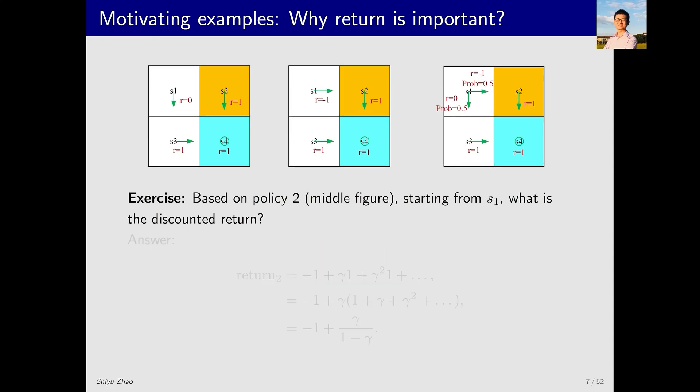For the second policy, I start from here and then move in this direction, proceed to this point and then stay still. Following this trajectory, what is the return? Initially, the reward is negative 1 for entering the forbidden area. Then, upon entering the target area, I continuously receive rewards of positive 1. Summing up the subsequent expressions within the parentheses yields gamma divided by 1-gamma with this negative 1. The return for the second policy is this equation.